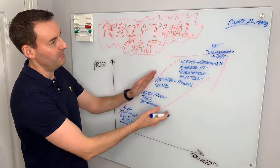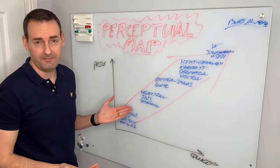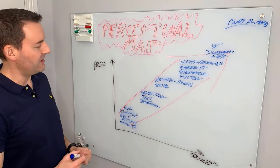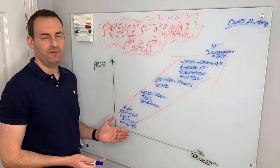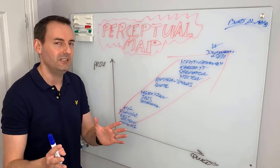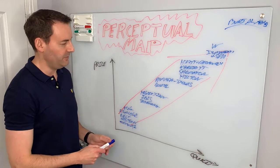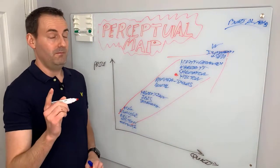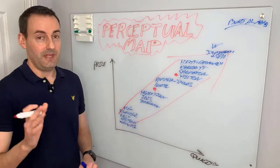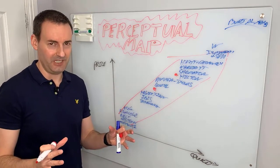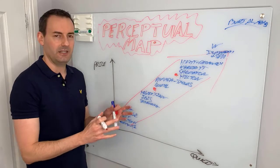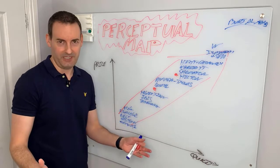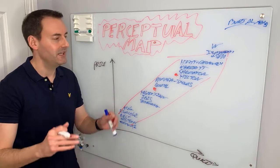You end up with a perceptual map like this, and you can do it with any brand or industry — cars, electronics, etc. It's a better way of looking at quality and price. First, use this with your teams to establish your own internal perception of where you are. If marketing and management think you're here but frontline sales people think you're somewhere else, that's a problem.